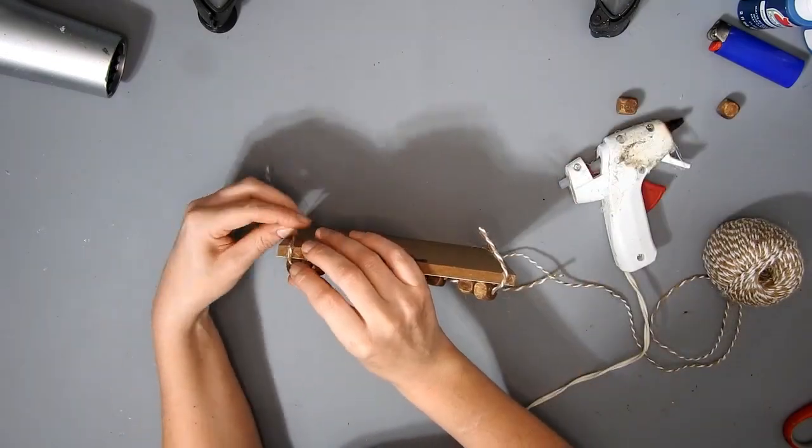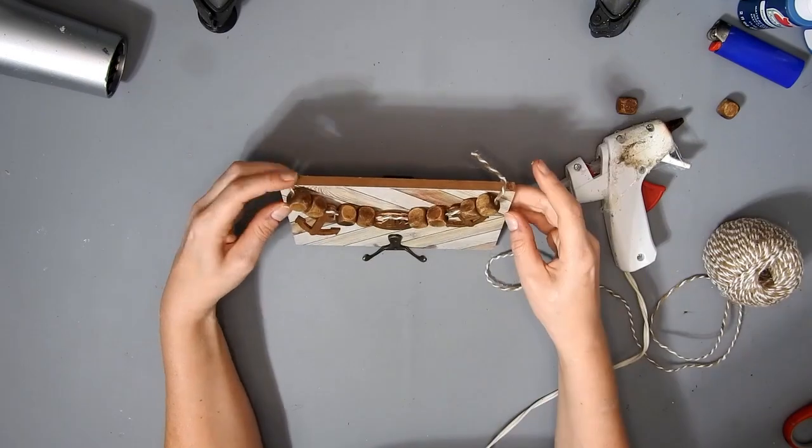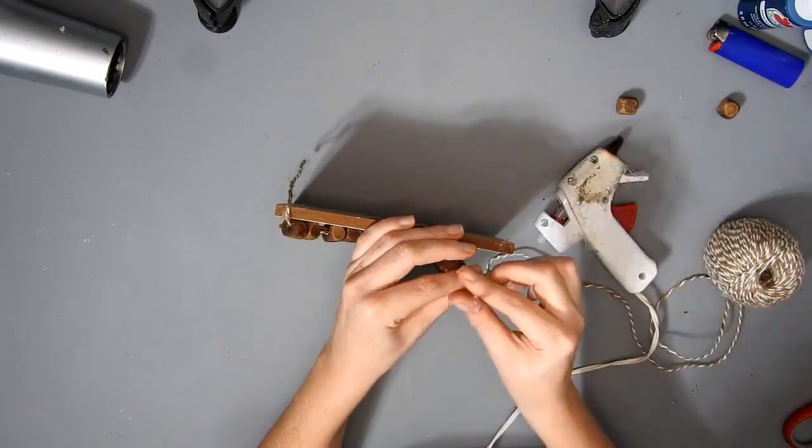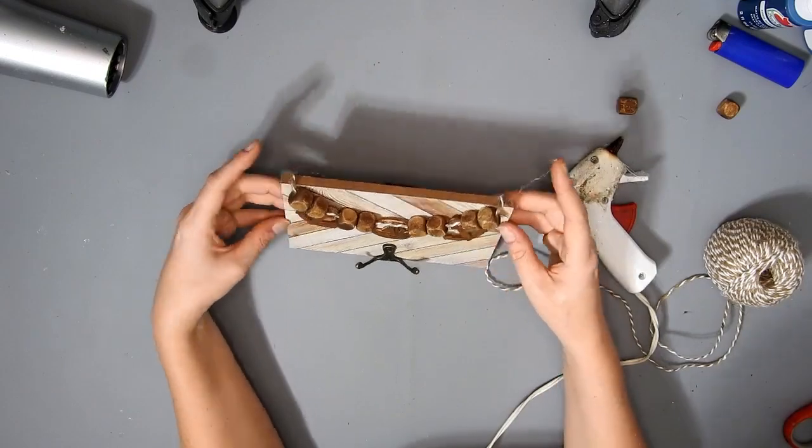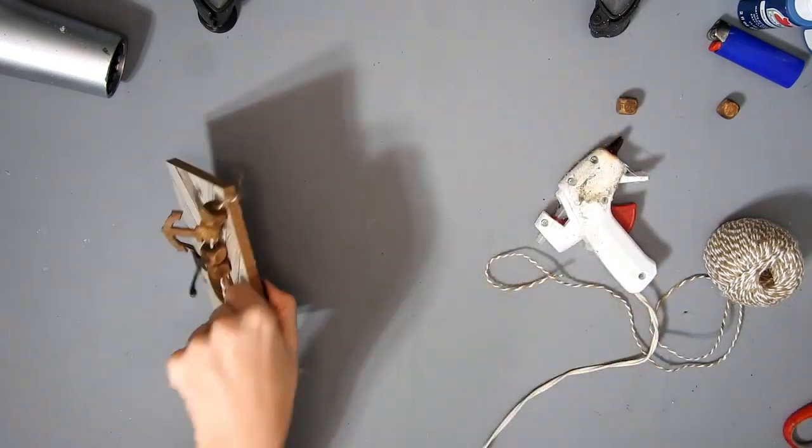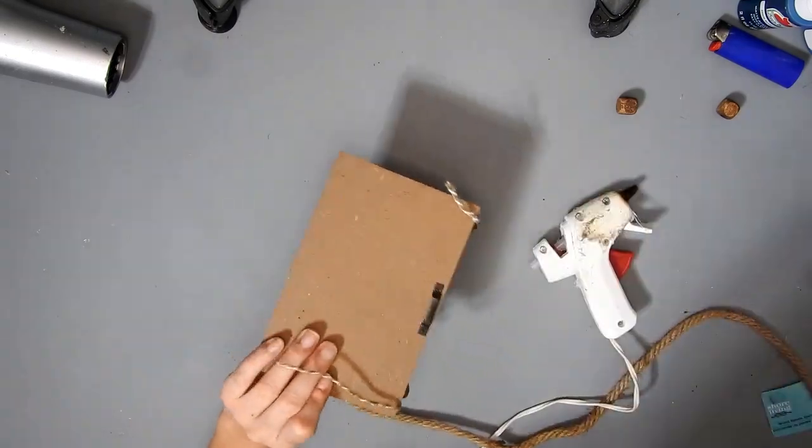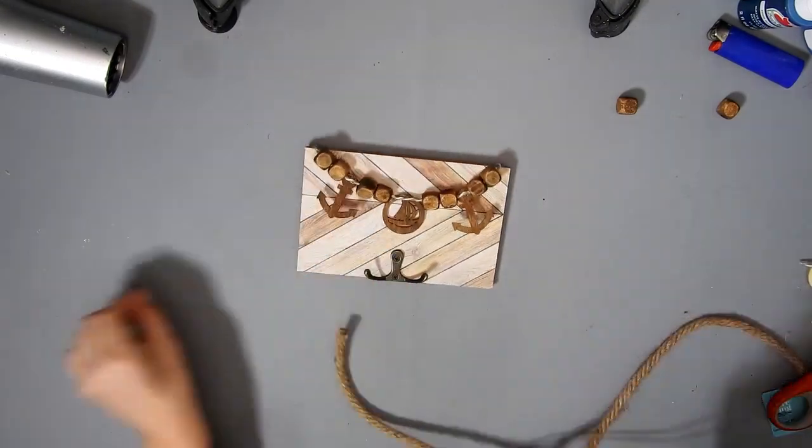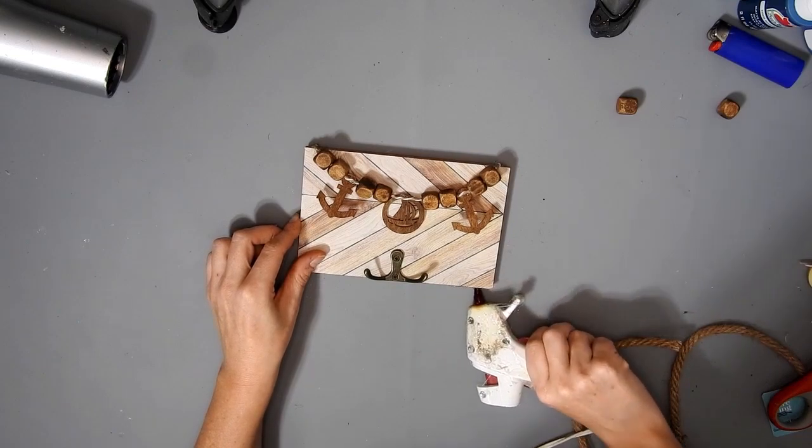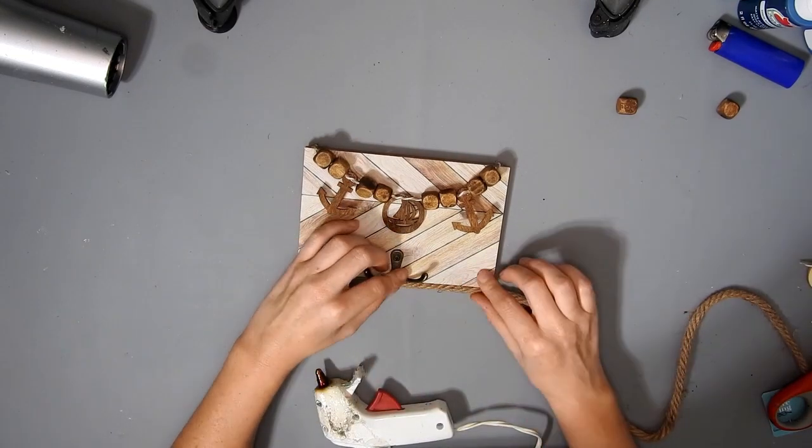Then I hot glued the ends of the twine on the top of this. It wasn't sitting how I wanted it to, so I just took the twine off and repositioned it. Then I snipped off the ends of the twine.